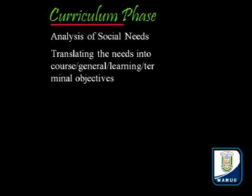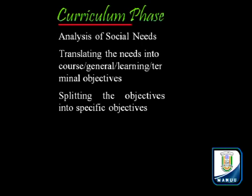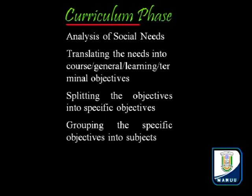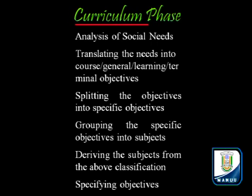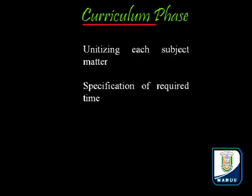Curriculum design involves analysis of social needs — it is very important to understand social needs when designing curriculum. The second step is translating the needs into course, general, or terminal learning objectives. The third is splitting the objectives into specific objectives. Next is grouping the specific objectives into subjects and deriving subjects from the above classification. This is followed by specifying objectives, unitizing each subject matter, and specification of required time.